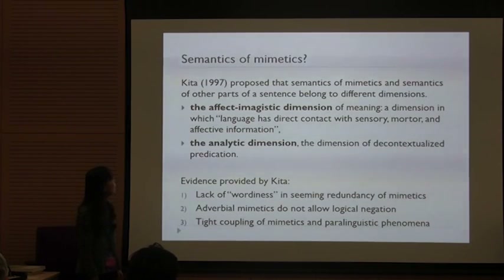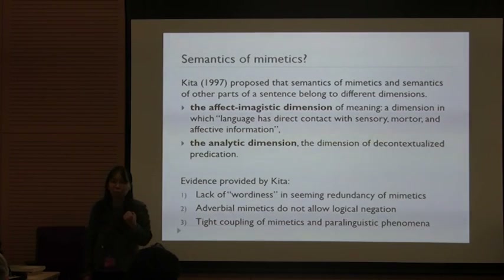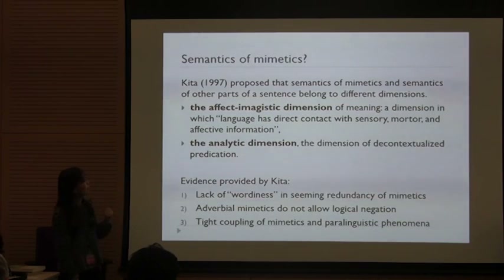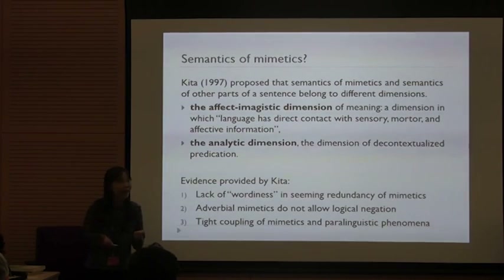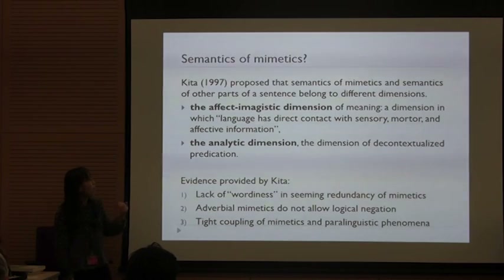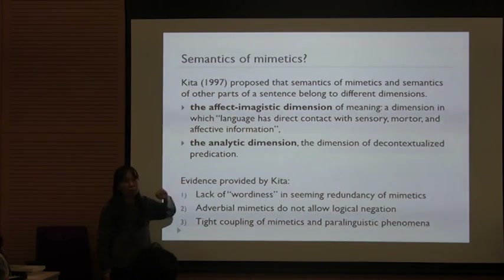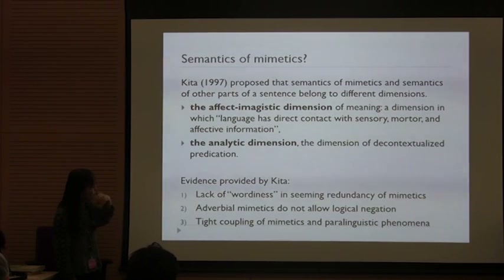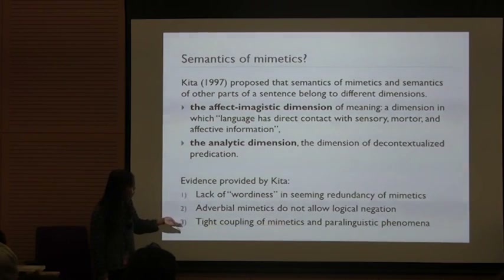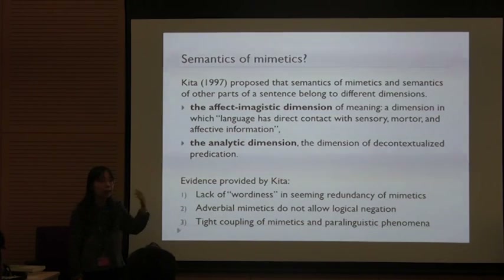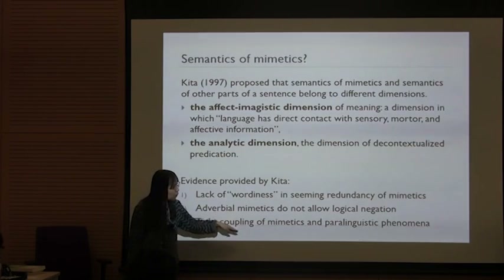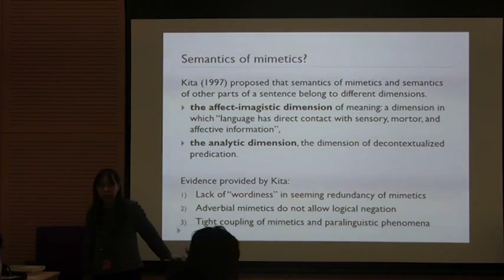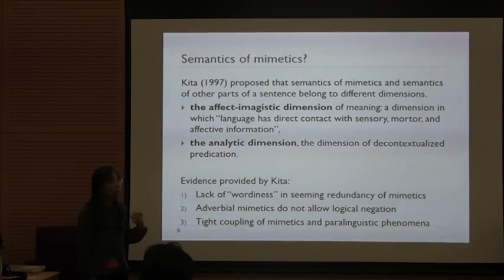In terms of the semantics of mimetics, I already mentioned it has an expressive mode of meaning, quite different from other types of words. Kita proposed that there are two dimensions of meaning: an imagistic-affective dimension, in which mimetics belong, and an analytic dimension, in which the meanings of all other words belong. He provided some evidence — though some of it was questioned by other researchers — including the tight coupling of mimetics and paralinguistic phenomena such as expressive prosody. What we are going to look at is the coupling of mimetics and gesture.